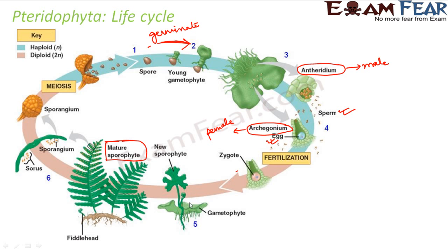This zygote then gradually grows to form a new sporophyte. The sporophyte is growing on top of the female gametophyte, attached to it and receiving nutrition from it. Then, as the sporophyte matures, we no longer see the gametophyte, and the plant we see as a pteridophyte or fern is nothing but the sporophyte.